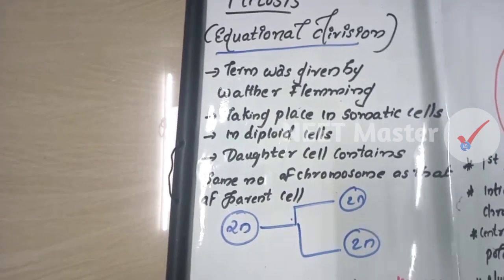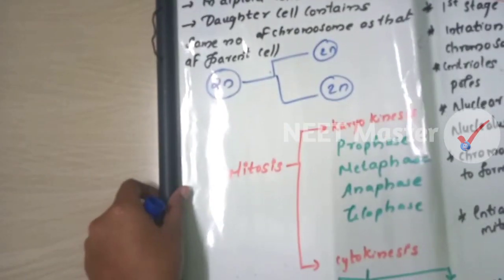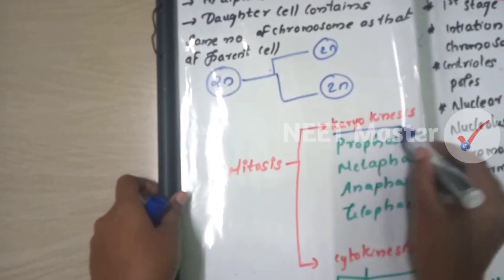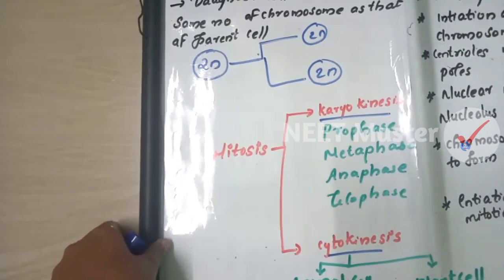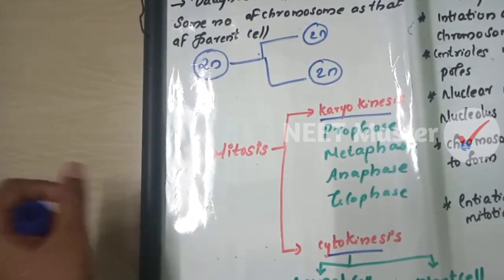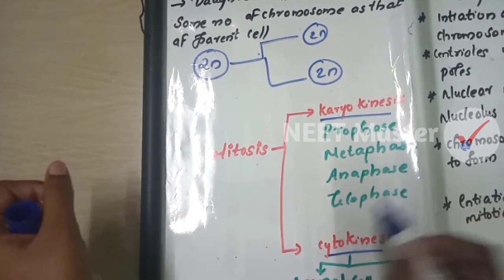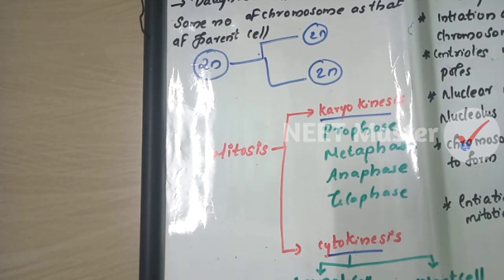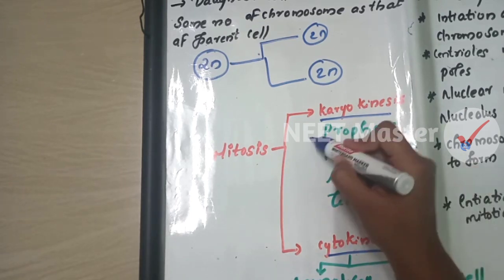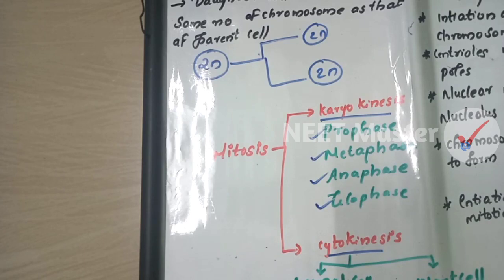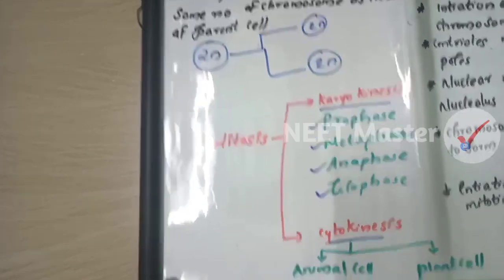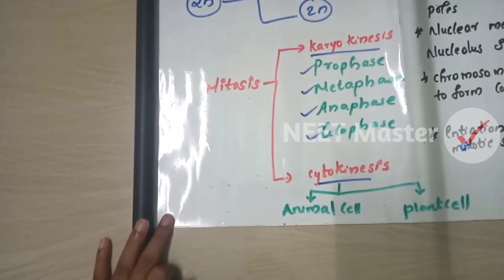We divide mitosis into karyokinesis and cytokinesis. Karyokinesis is nuclear division. Cytokinesis is cytoplasmic division. Karyokinesis includes prophase, metaphase, anaphase, and telophase. Cytokinesis occurs in both animal cells and plant cells.